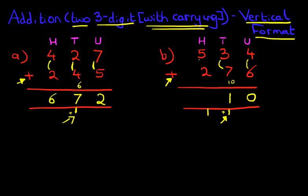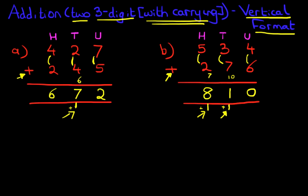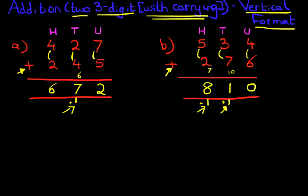And lastly, we're going to add the hundreds. Five plus two. And don't forget the one over here. So five plus two is seven. Plus the one over here is eight. So five hundred and thirty-four plus two hundred and seventy-six is eight hundred and ten. See, that wasn't very difficult, was it?